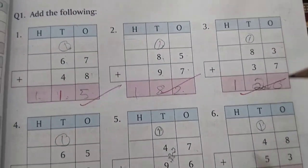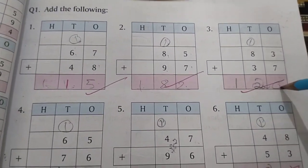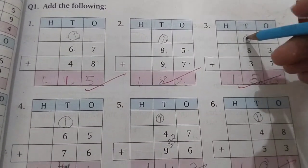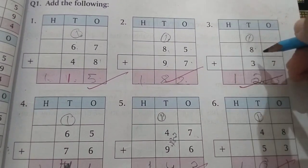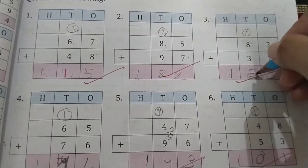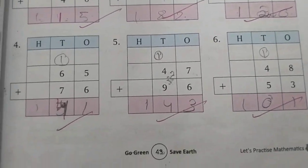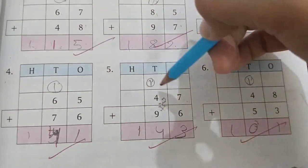Next, 3 plus 7 will be 10, 0 and 1 upper side, 9 makes 12, 1, 2, 0, 1, 20. Next all the sums are solved.